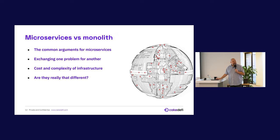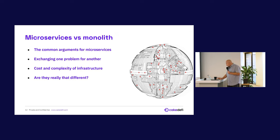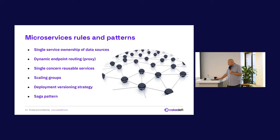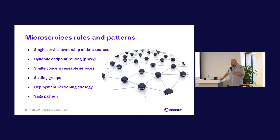Let me do an example here. Microservices rules and patterns: single service ownership of data sources. I was breaking that all the time in the beginning. If you put a filter on some data, it's really good to have that in one service — otherwise you have to put it in a library and implement it in five services. Also, there are a lot of race conditions and deadlocks if multiple services read from the same table.